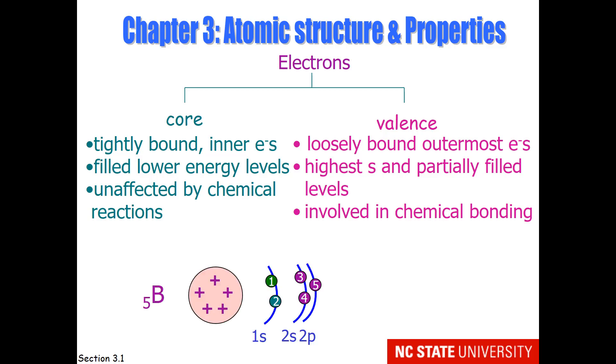Let's take boron as an example. Boron has five protons, and when it's neutral, it has five electrons. I'm showing them here in their orbitals using the Schrodinger model. The core electrons in boron would be the 1s electrons. The valence electrons are the outermost S, so that would include 2s2, and any partially filled levels, so that would also include 2p1. So boron has three valence electrons.